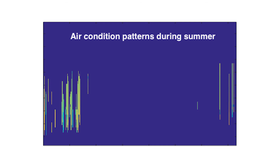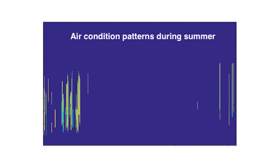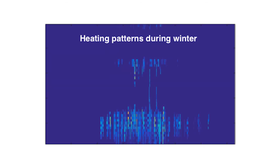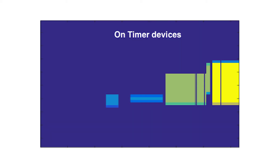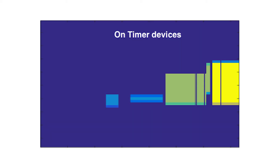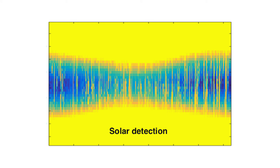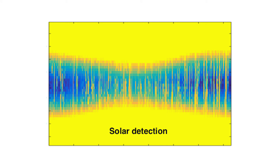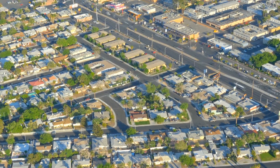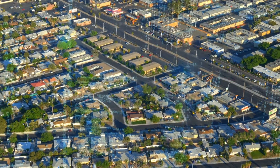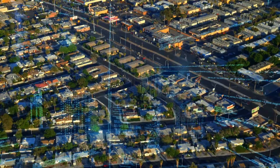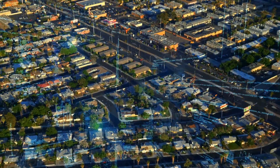So the question is: how can we apply machine learning techniques to understand different patterns in this data, different user behavior, different profiles in users, and how to communicate between this and the weather data and other information like the price of electricity, renewables, and all of this?